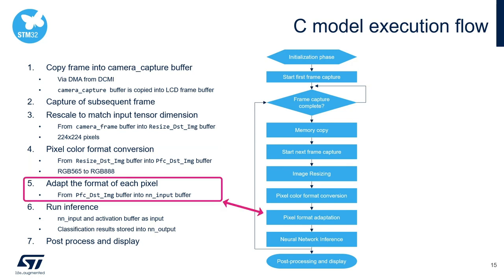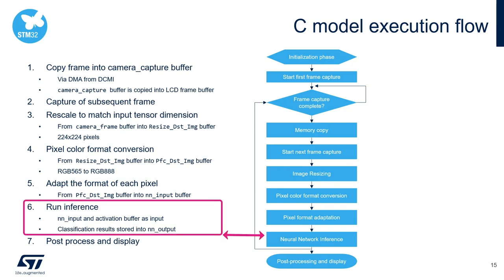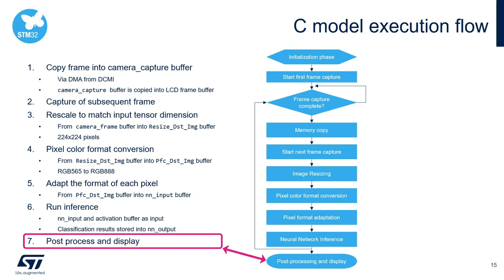Next, adapt the format of each pixel contained in the PFC destination image buffer into the NN input buffer. The adaptation consists in changing the representation of each pixel to fit with the range defined by the NN model training and the quantization format expected by a quantized model — in other words, the normalization. Next, run inference of the neural network model. The NN input buffer as well as the activation buffer are provided as input to the neural network. The results of the classification are stored into the NN output buffer. Finally, parse the output to find the class label with the largest predicted probability and display the results on the LCD display.